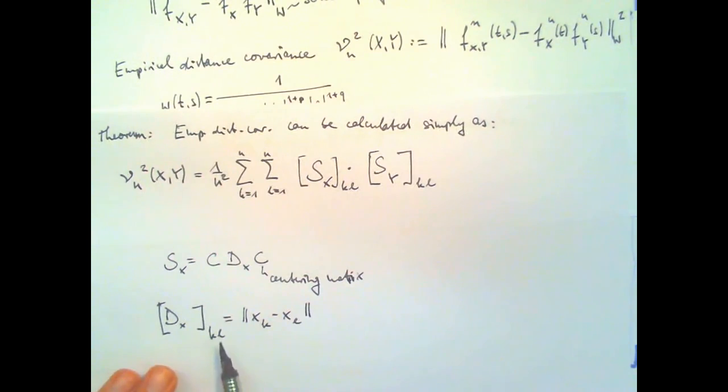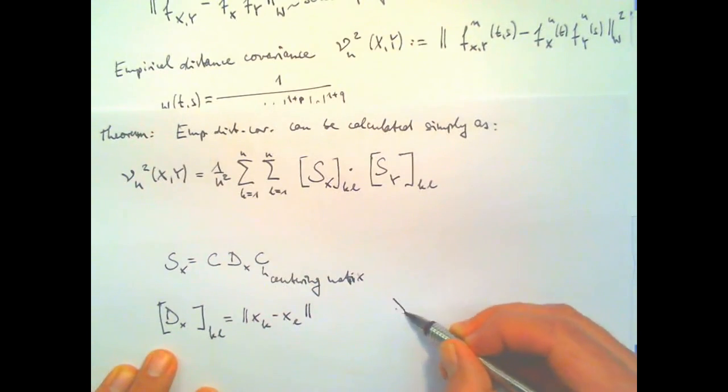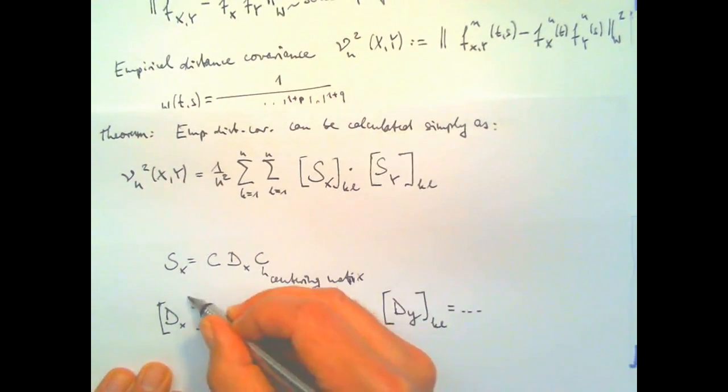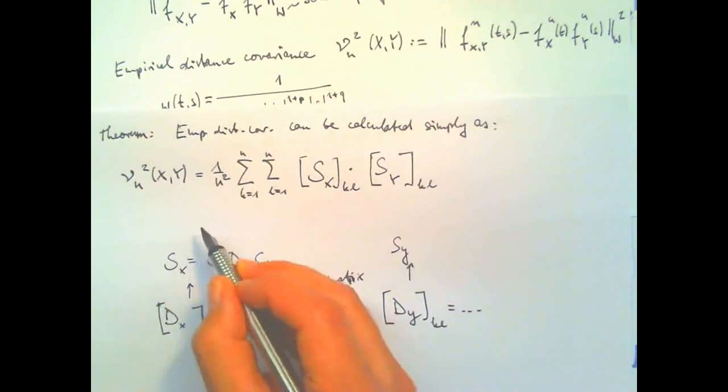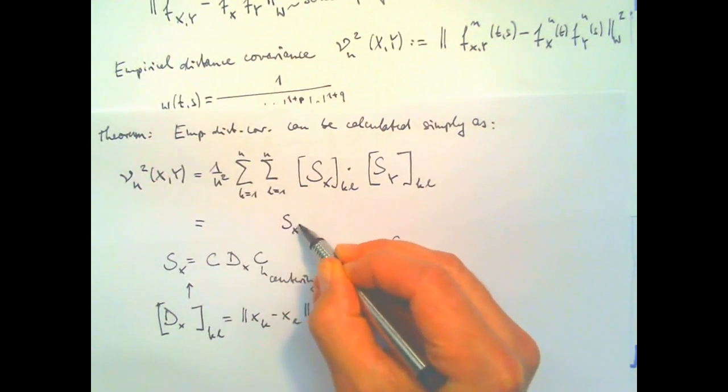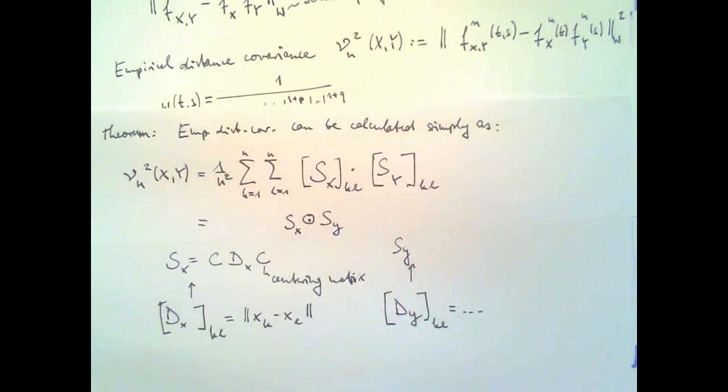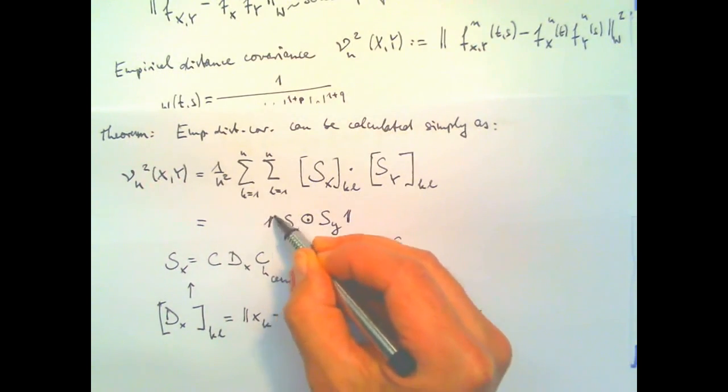So what we do is we have two random variables X and Y. We compute for each pair of random variables X their distance. We do the same for the random variable Y. Then we center both. So centering this one such that it has a row and column mean of zero gives S, X. Whereas this thing after centering gives S, Y. And then we take the element-wise product of these matrices. So taking the element-wise product could be written differently here as S, X. If you like fancy notation, this would be the element-wise product. And I need to sum the summation. I could also write by multiplying with a row and a column vector of ones. And then I need to normalize by the number of entries.